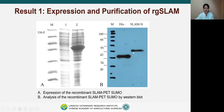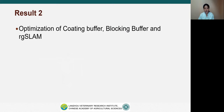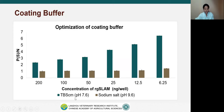We first confirmed that the recombinant protein expressed by the E. coli expression system has the correct molecular weight by SDS-PAGE and Western blot. Next, the optimization of coating buffer, blocking buffer and recombinant SLAM was carried out. For the coating buffer, two buffers were tested: TBS-CM buffer at pH 7.6 and sodium carbonate buffer at pH 9.6. Results showed that TBS-CM buffer gave higher OD values at different concentrations of SLAM than the sodium carbonate buffer. Therefore, TBS buffer was selected for this ELISA.